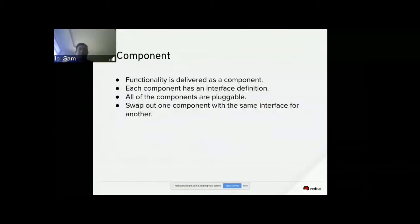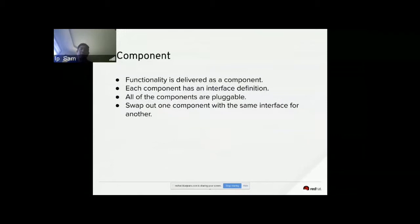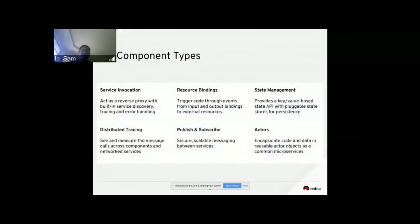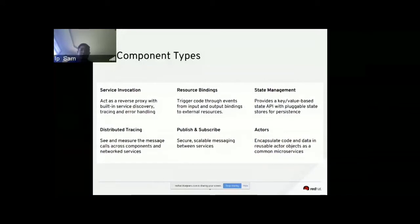A component is basically functionality delivered as a component. Each component has an interface definition, and all these different components are pluggable, so we can swap them in and out easily. The component types include service invocation, resource binding, state management, distributed tracing, publish and subscribe, and actor.